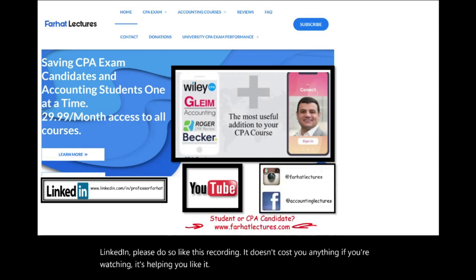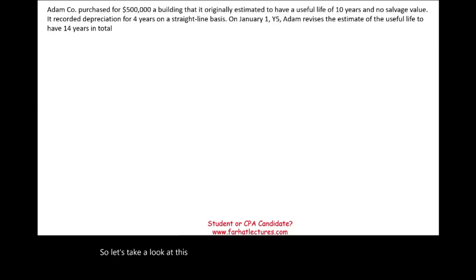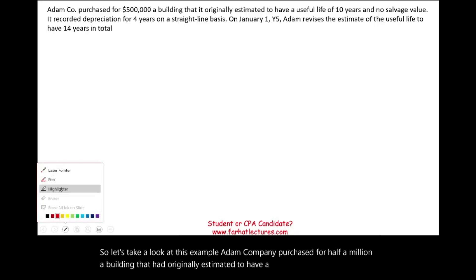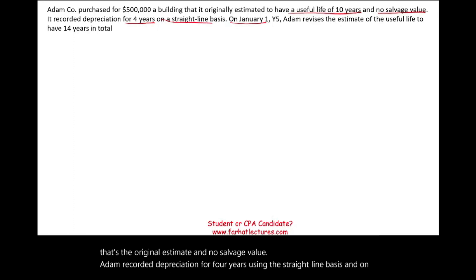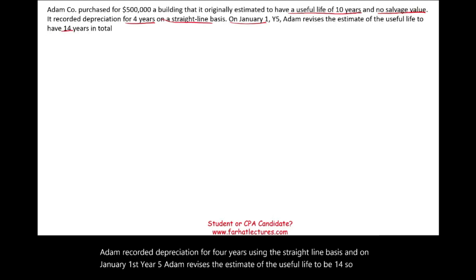So let's take a look at this example. Adam Company purchased for half a million dollars a building that it originally estimated to have a useful life of 10 years — that's the original estimate — and no salvage value. Adam recorded depreciation for four years using the straight-line basis, and on January 1st of year 5, Adam revises the estimate of the useful life to be 14 years. Simply put, they extended the original life by four years.